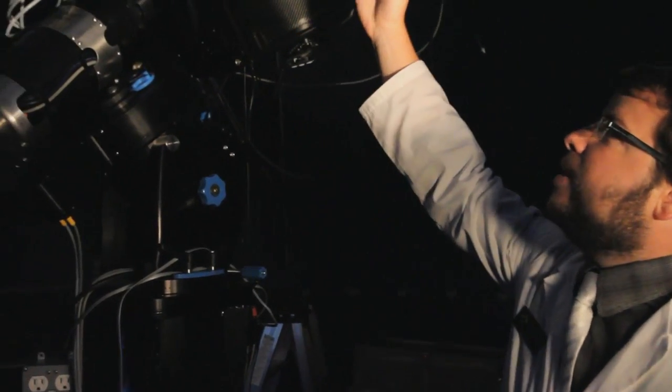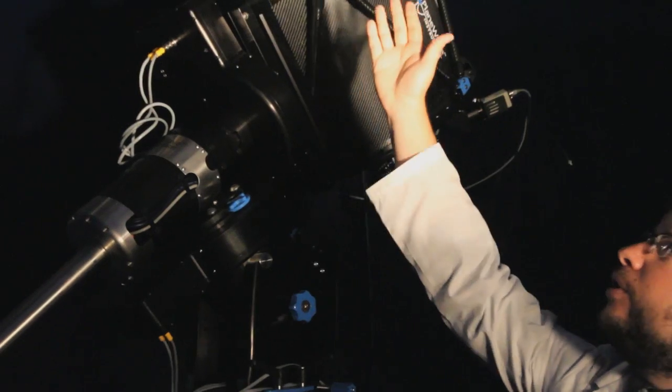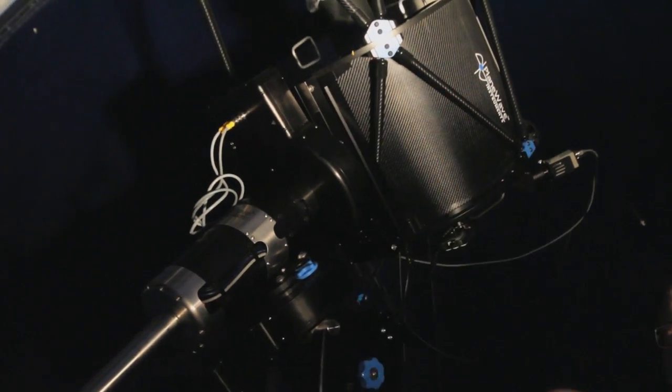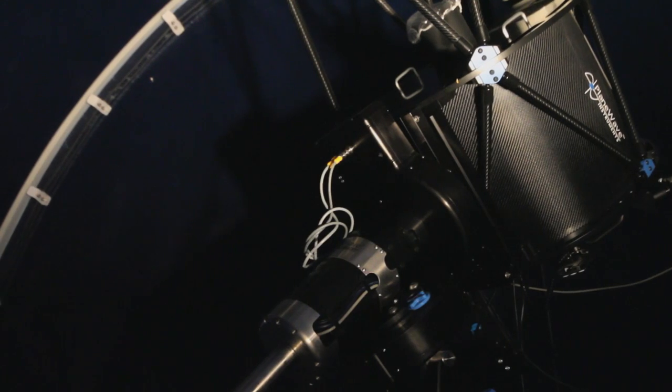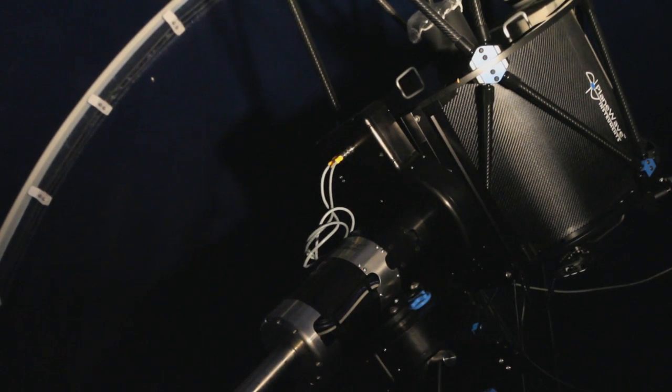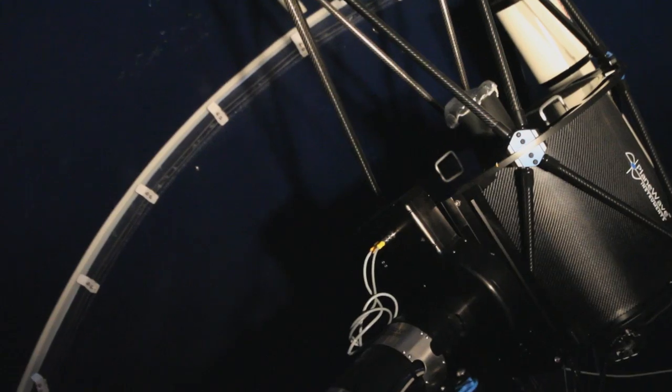The system uses a two-mirror design: you have the main 20-inch mirror and a smaller 7-inch mirror which helps to focus and make that image much better, whether you're looking through the eyepiece directly on the telescope or viewing it remotely.